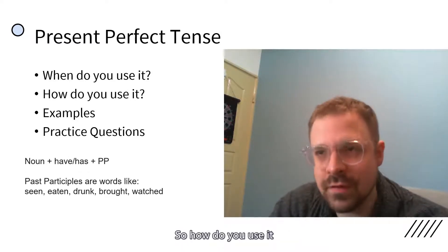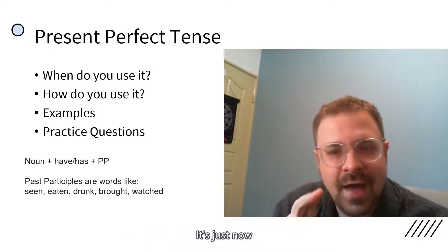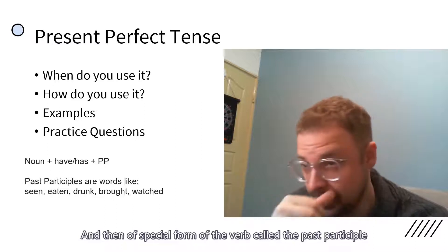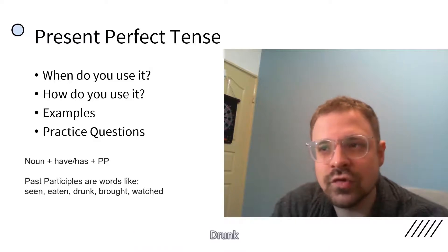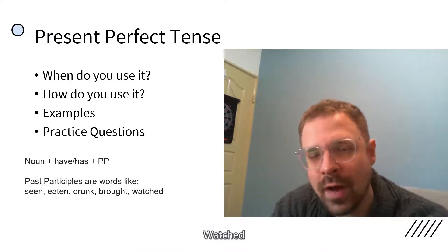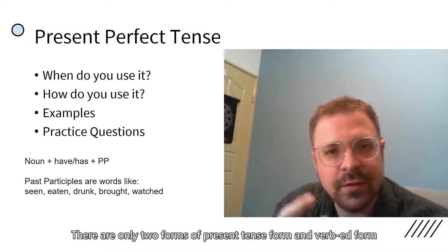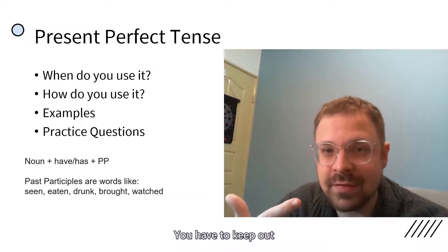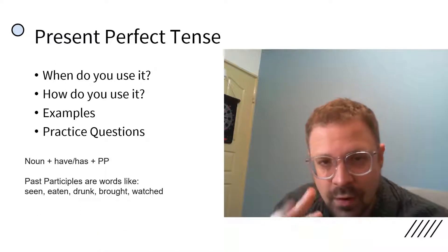So how do you use it? It's pretty simple in terms of its structure. It's just noun, have or has, and then a special form of the verb called the past participle. So past participles are words like seen, eaten, drunk, brought, watched. In many verbs, even most verbs in the English language, there are only two forms. There's a present tense form, and then there's a verb ed form. But irregular verbs, you have to keep in mind that some of them will have a third unique form.